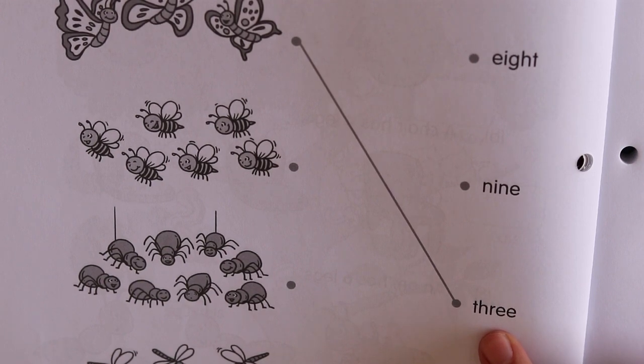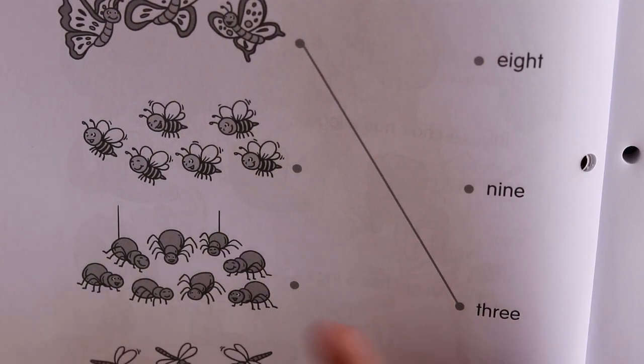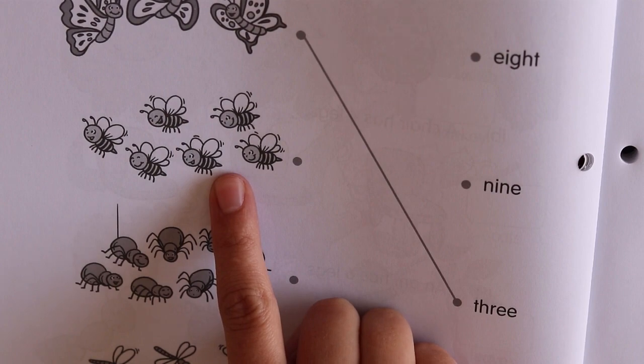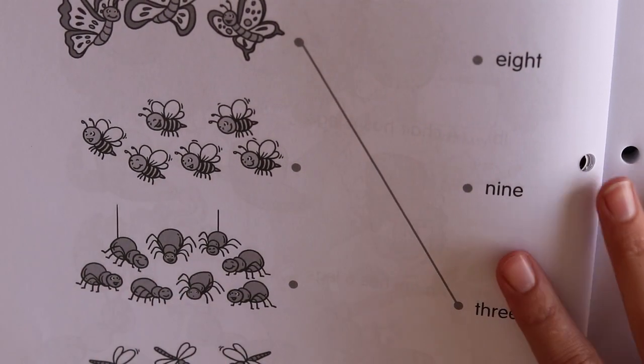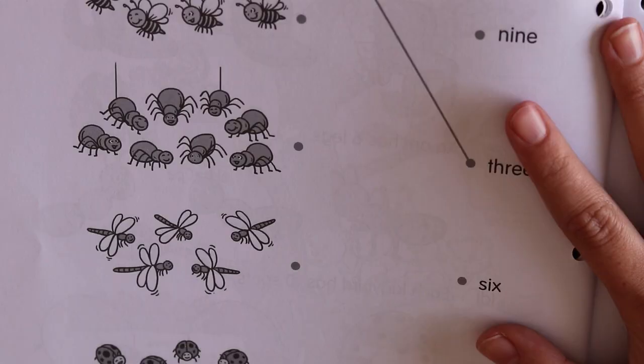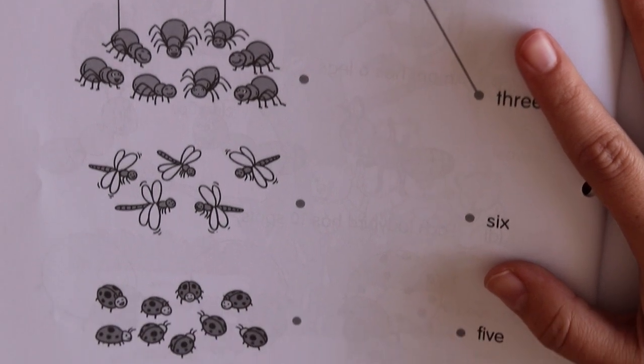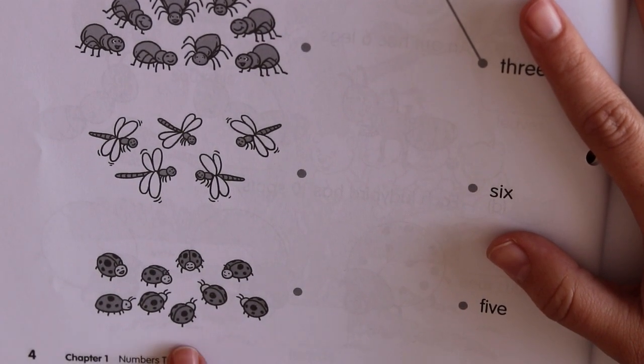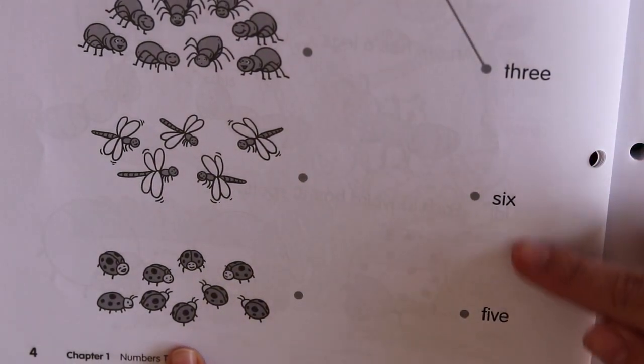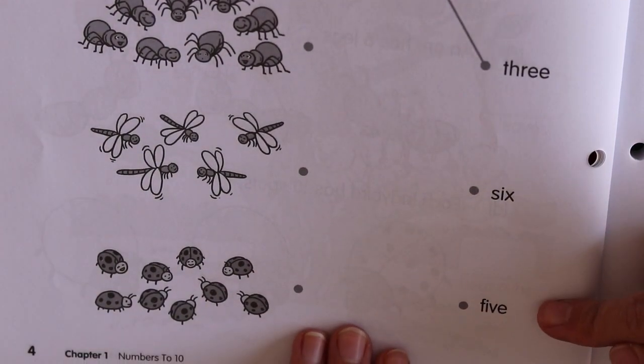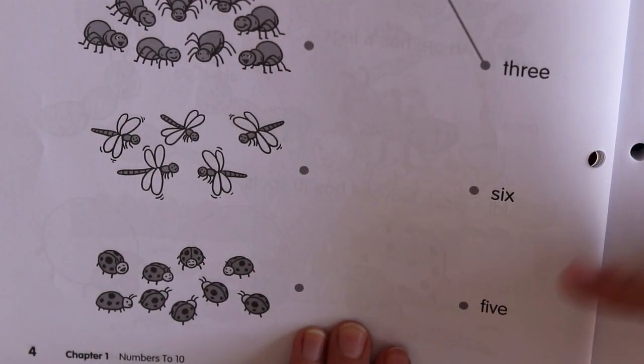If you don't have a ruler, try and make your lines nice and straight. Okay. Count the bees. Count the spiders. Count the dragonflies. And lastly, count the ladybugs. And then you'll see on this side are the words. All you need to do is match them up.